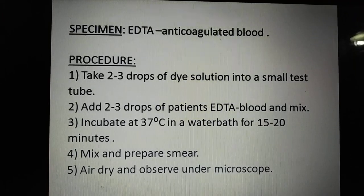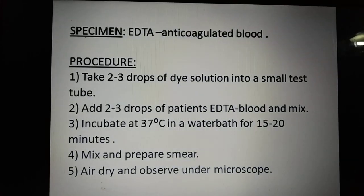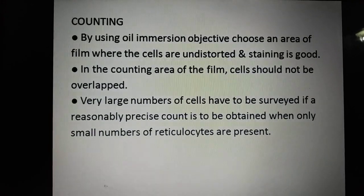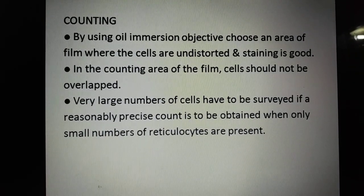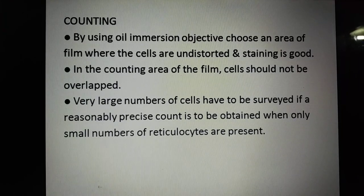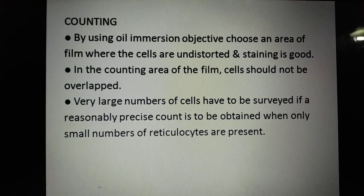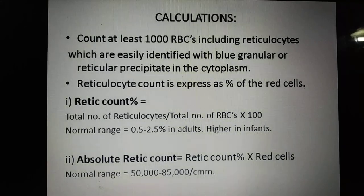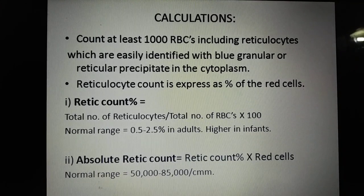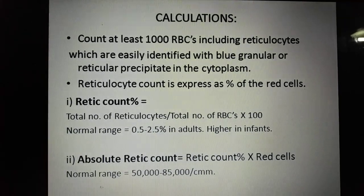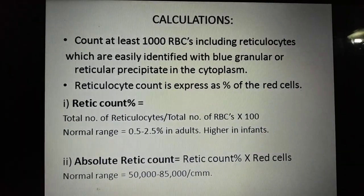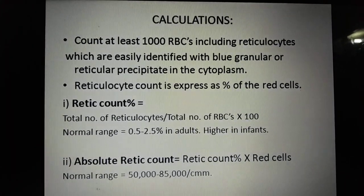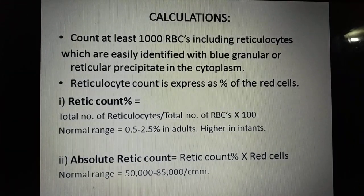Add two to three drops of patient EDTA blood, mix, and incubate for 15 to 20 minutes. Then prepare the smear and observe under the microscope. For counting, use the oil immersion objective. Choose an area of the film where the cells are undistorted, staining is good, and cells are not overlapping. Count at least 1000 RBCs including the reticulocytes, which are easily identified by the blue granular reticular precipitate in the cytoplasm. Reticulocyte count is then expressed as a percentage of red cells.